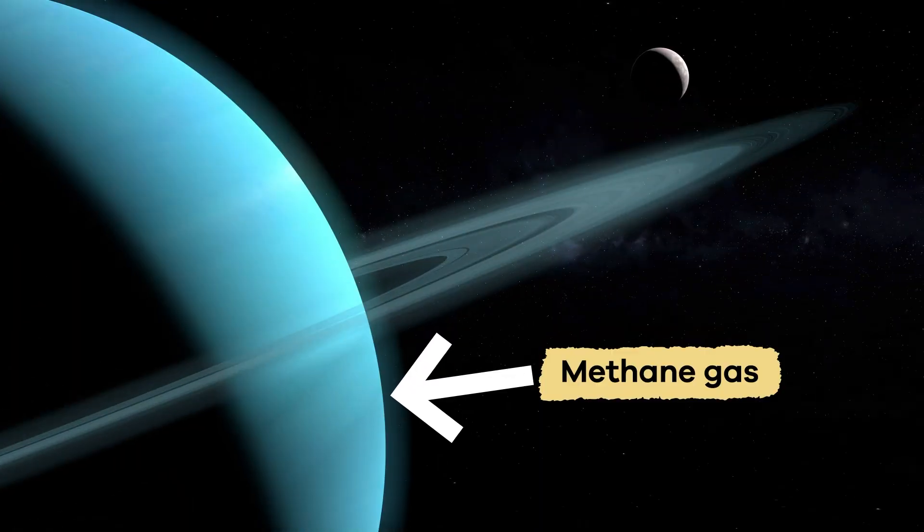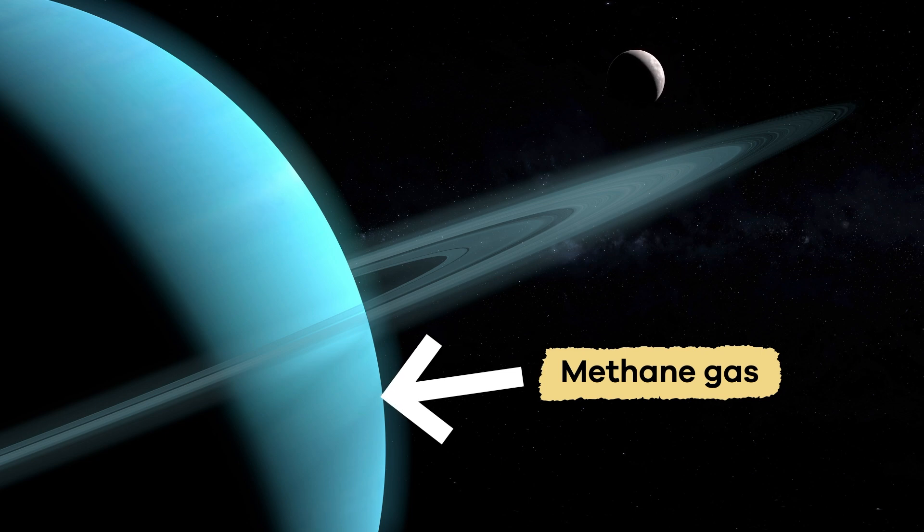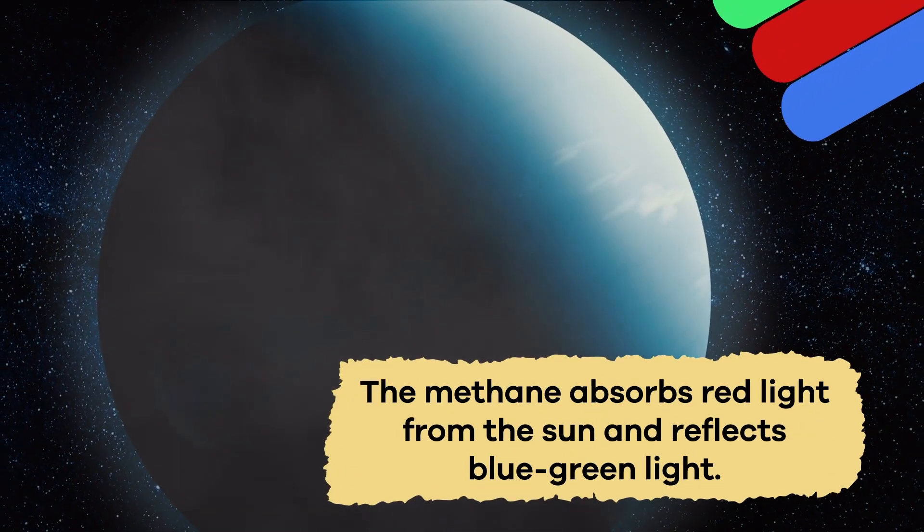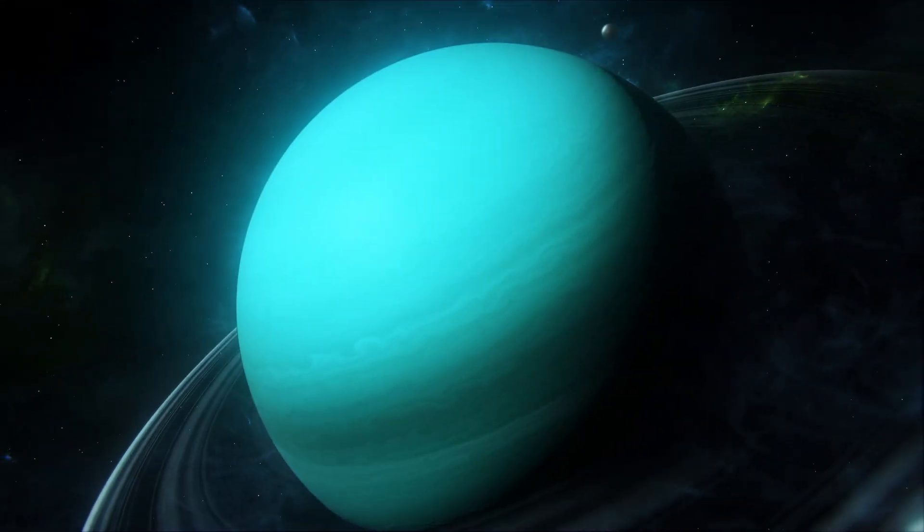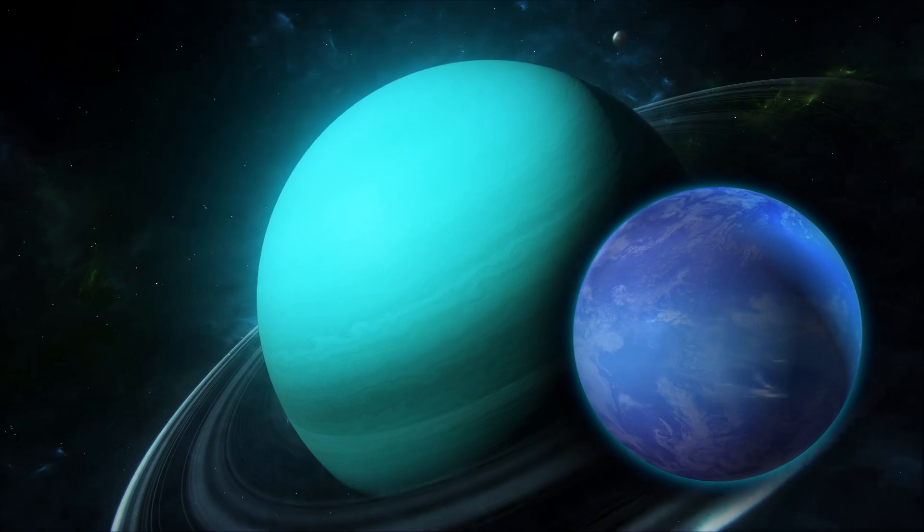The planet's unique color comes from the methane gas in its atmosphere. The methane absorbs red light from the Sun and reflects blue-green light. This effect is why Uranus and Neptune have similar appearances.